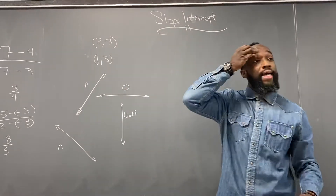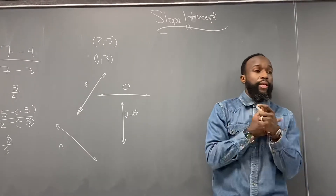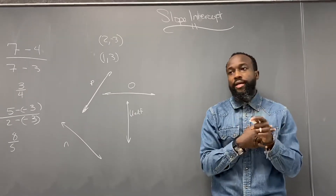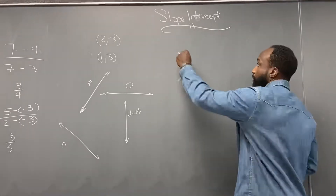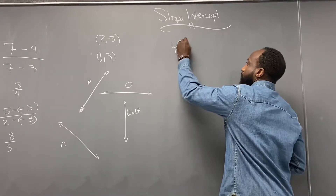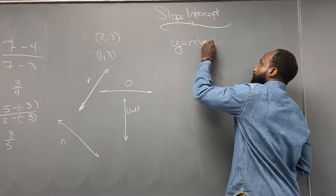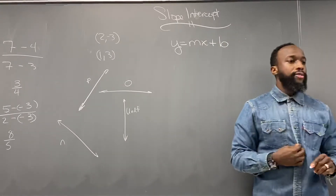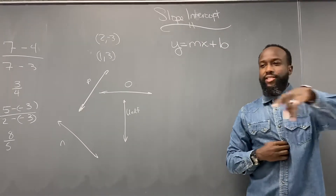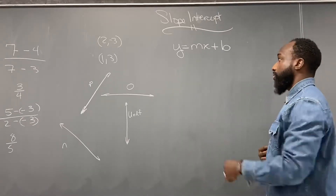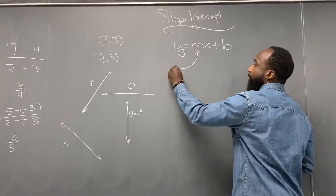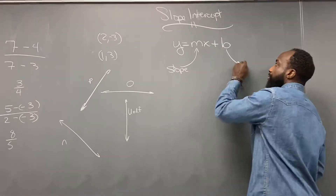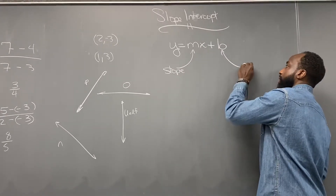Now today we're going to look at the slope intercept form, and we're going to find a slope and a y-intercept. So the slope intercept form looks like this: y equals mx plus b. M represents the slope, and b represents the y-intercept.